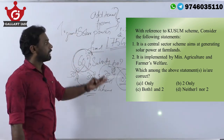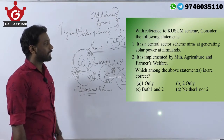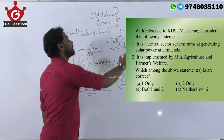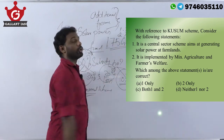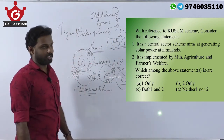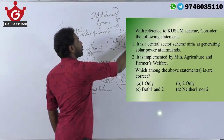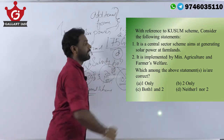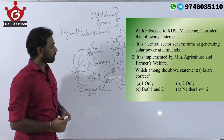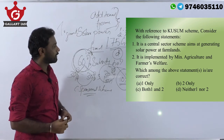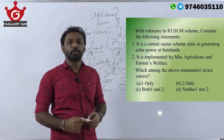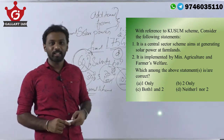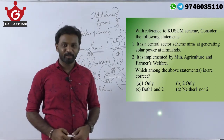Regarding statement two: it is implemented by the Ministry of Agriculture and Farmers Welfare — this is also wrong. This scheme is implemented by the Ministry of New and Renewable Energy. So both statements are wrong, and our answer is option D — neither one nor two. If you found this video useful, please share it with your friends and subscribe to our channel for more quality videos. Thank you for watching.